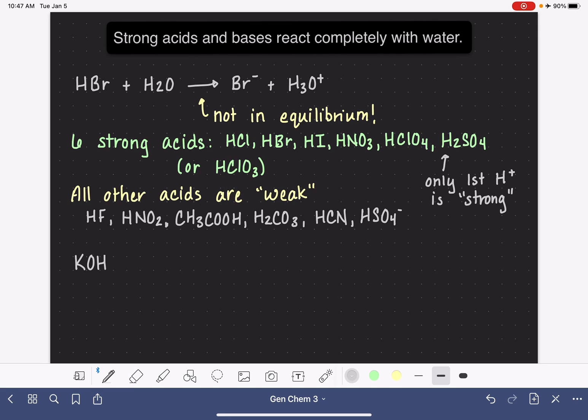KOH is an example of a strong base. And when you put it in water, it just dissociates into potassium ions and OH- ions. Strong bases are substances that completely dissociate. Again, not in equilibrium. And they produce the hydroxide ion.